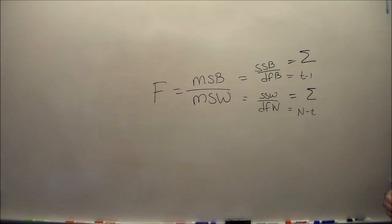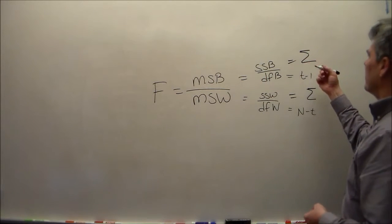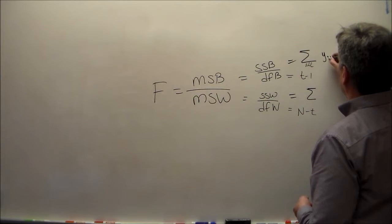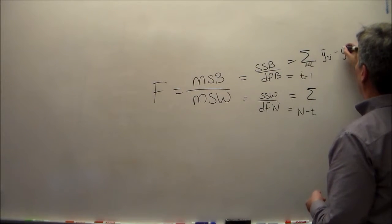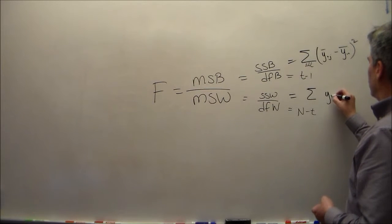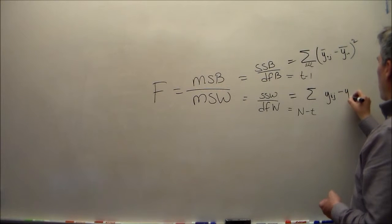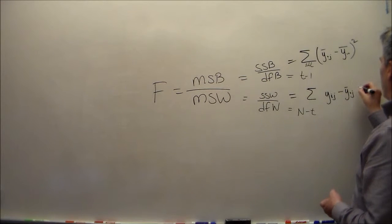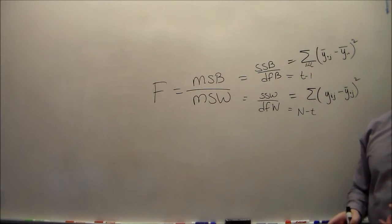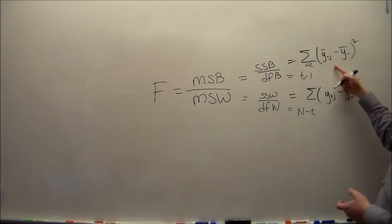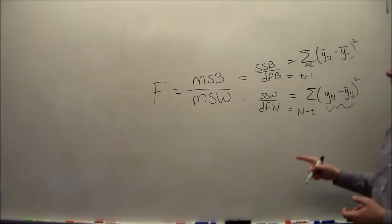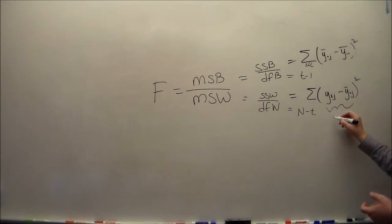Do you remember the formula for the sum of squares between? It was the sum over all the data points of y-dot-j-bar minus y-dot-dot-bar, squared. And the sum of squares within is y-i-j minus y-dot-j-bar, squared. For this sum of squares between ratio to have a chi-squared distribution, this difference has to have a normal distribution. And for the sum of squares error divided by the degrees of freedom for error to have a chi-squared distribution, this difference has to have a normal distribution.